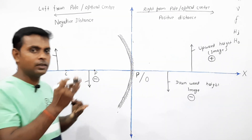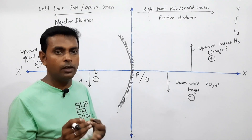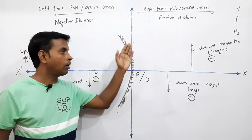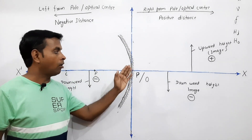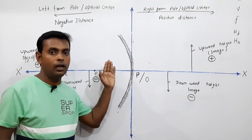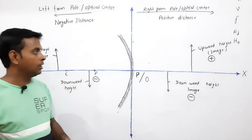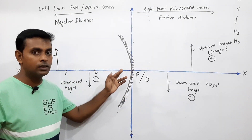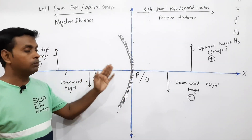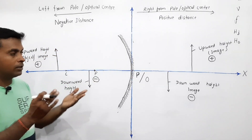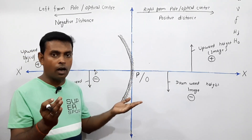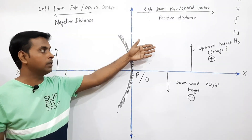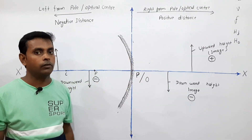Let us understand what u, v, and f are. u is the distance of the object from the pole of a mirror or the optical center of a lens. v is the distance of the image from the optical center of a lens or the pole of a mirror. f is the focal length, for either a lens or a mirror. h_i is the height of the image and h_o is the height of the object.